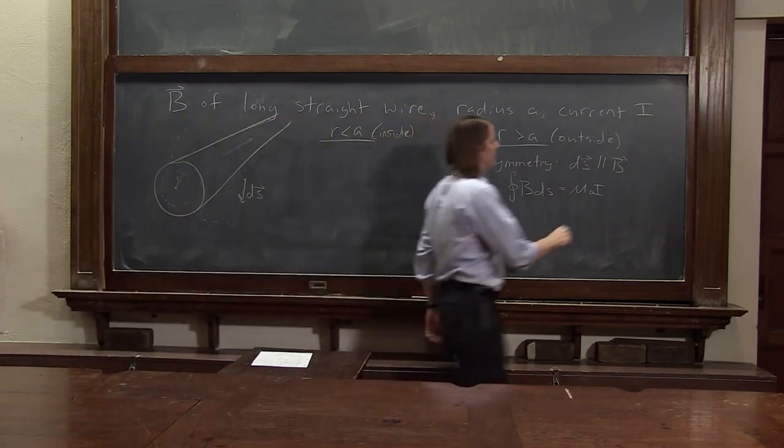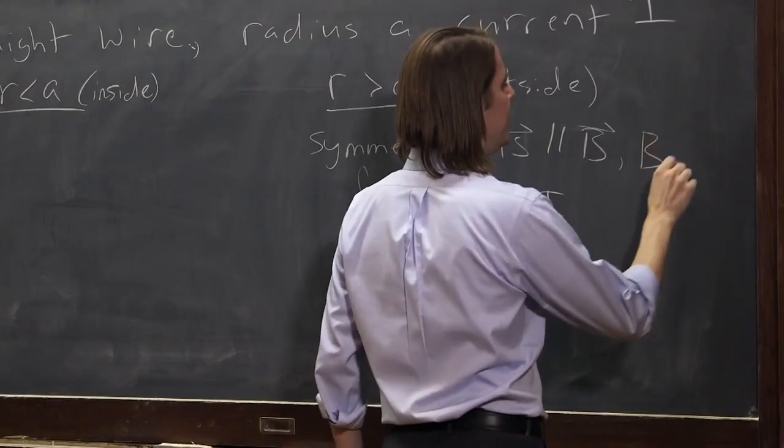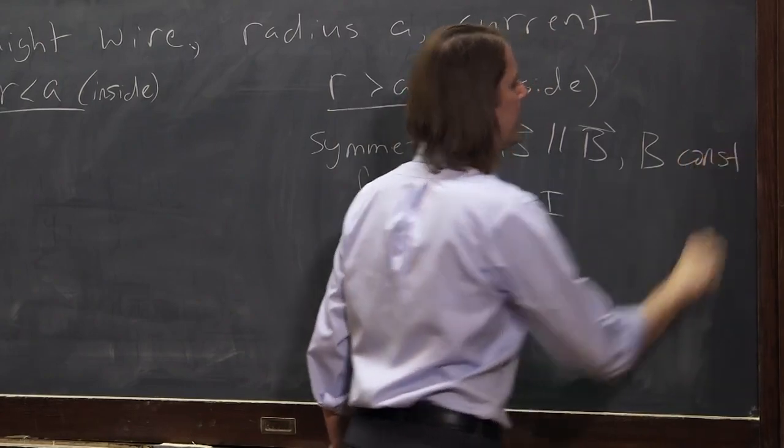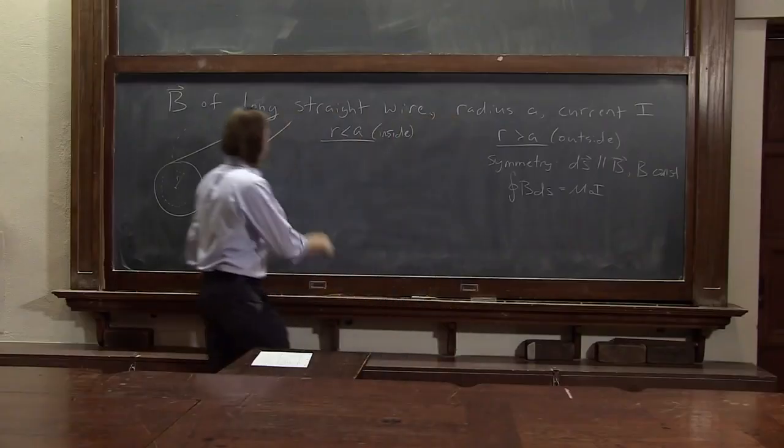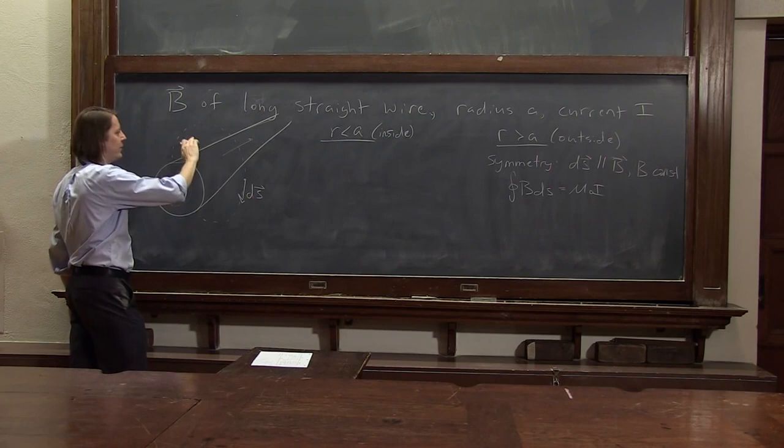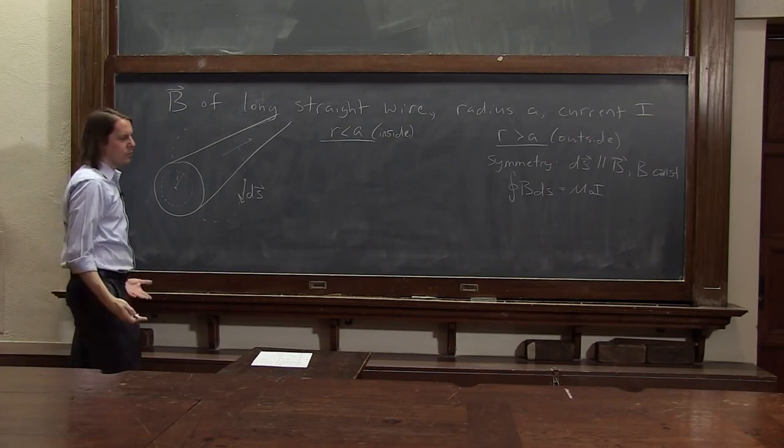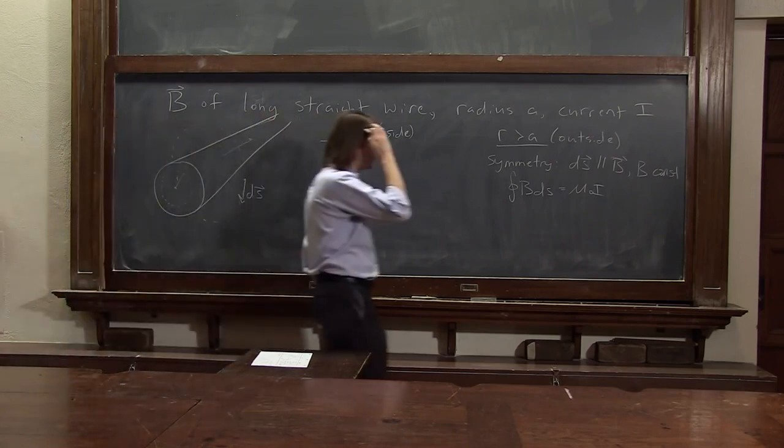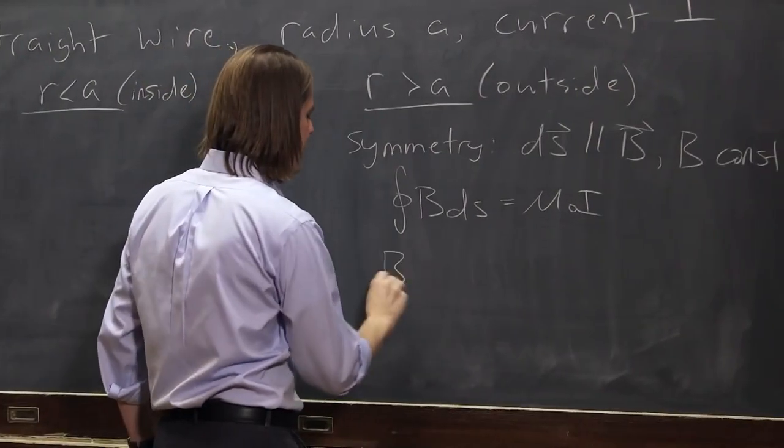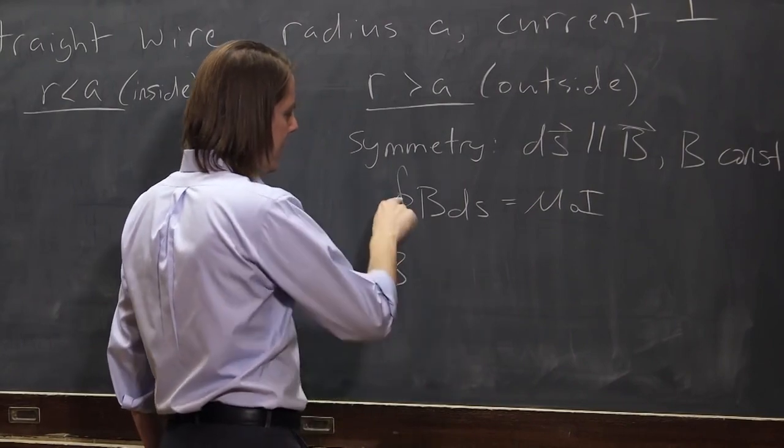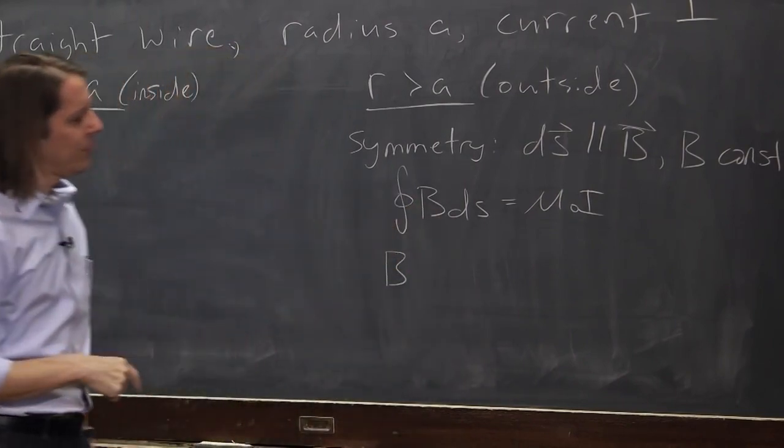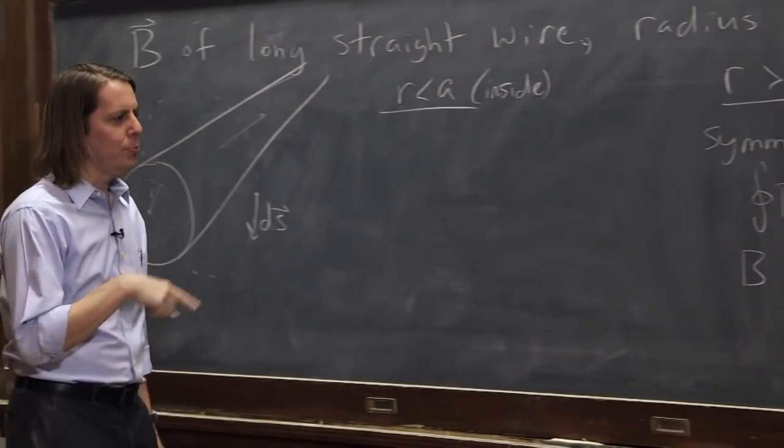Symmetry also tells us something else, and that is that the magnitude of B is constant. When we go all the way around the Ampereian loop, we're always at the same distance from the wire. There's nothing special about any one of these points relative to any of the other points. So there's no reason that the B should change. It should always be the same. So therefore, the B can come out of the integral. If the B comes out of the integral, we're left with the integral around a loop of dS.